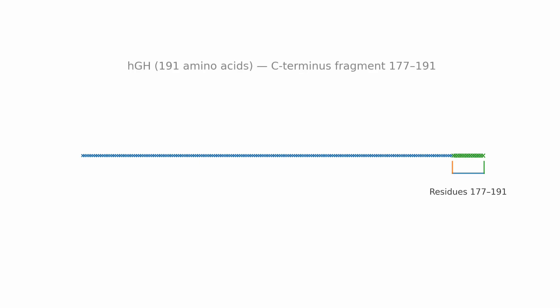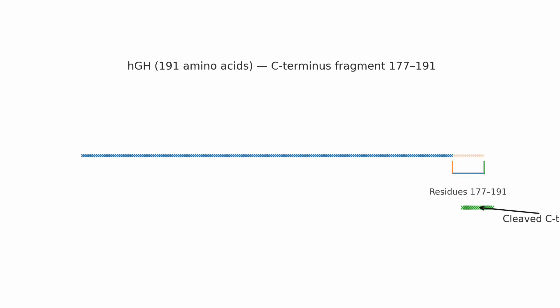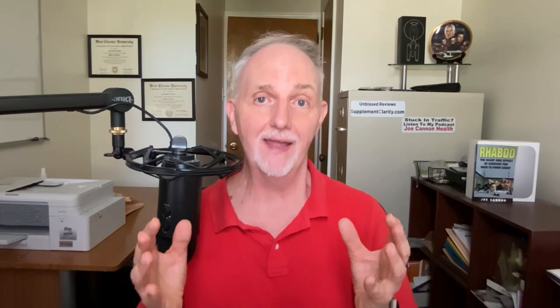AOD 9604 is actually a segment of human growth hormone — that's why in some circles it's called a fragment of HGH. Human growth hormone is 191 amino acids long; AOD 9604 is 15 amino acids pulled from that larger molecule. Because that peptide is unstable, scientists attach a tyrosine amino acid to improve its stability. You can think of this peptide as a kinder, gentler version of growth hormone with all the pros and none of the cons.